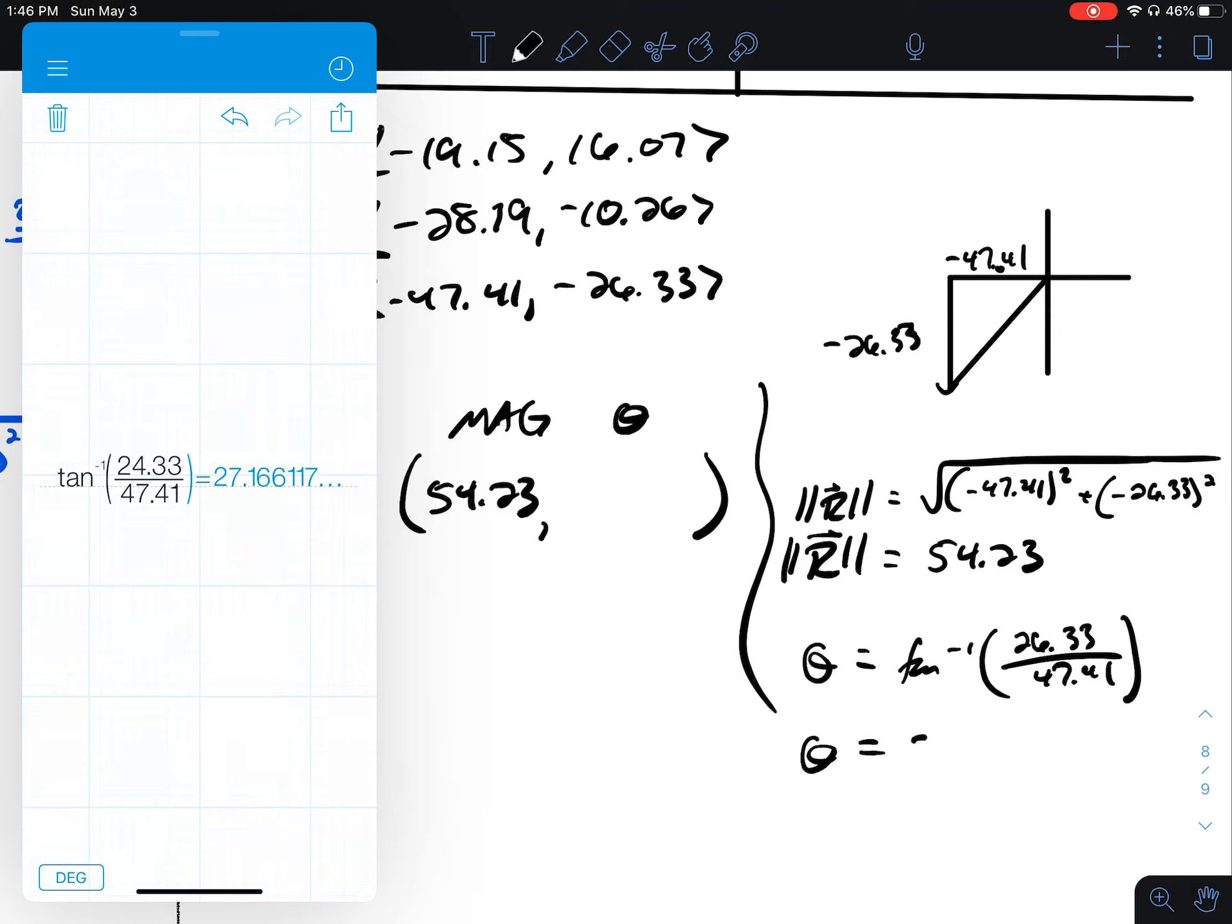That gives me 27.17 degrees. Does it make sense that that's this angle here? Absolutely not. That would be in quadrant one. So that tells me this is the reference angle.